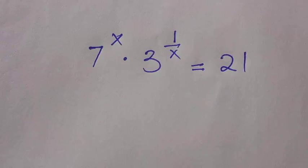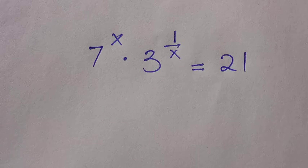Good day viewers, you are welcome. How to solve this exponential and logarithmic equation where we have 7 to the power x multiplied by 3 to the power 1 over x equals 21.